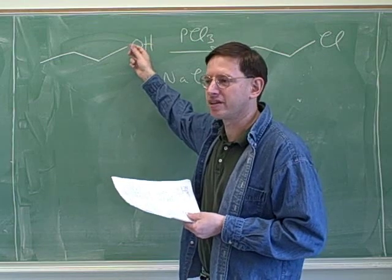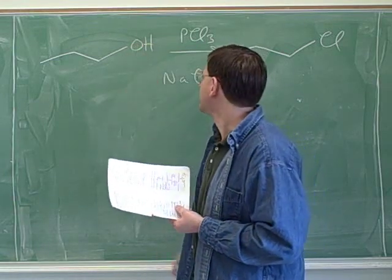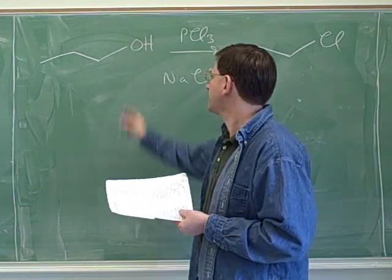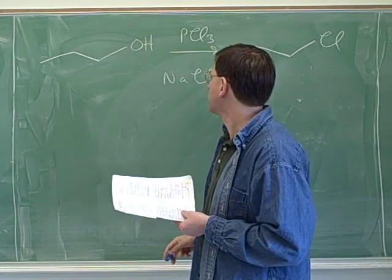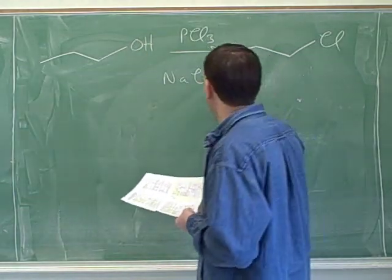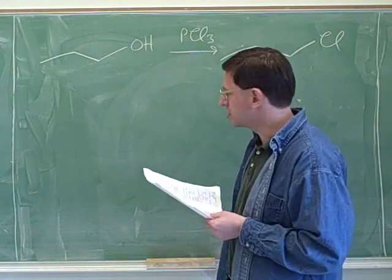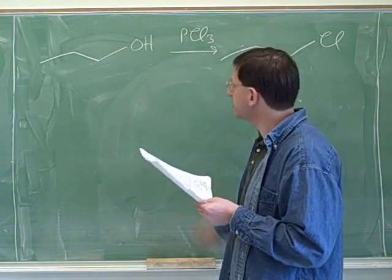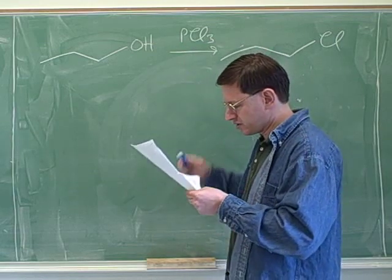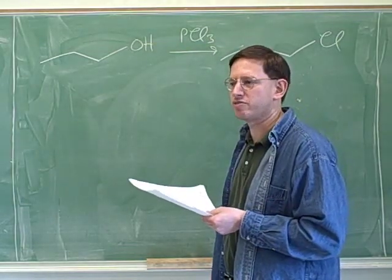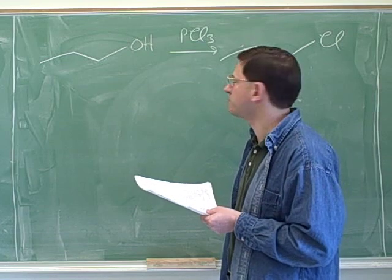Yeah, so the problem here is that this is not a good leaving group. So there still would be ways to get an SN2 out of this. However, one way to get around this is to use these special chlorinating agents here. So this might be a special chlorinating agent. Now this is not the special chlorinating agent that you used in the little notes that you gave me.